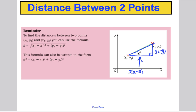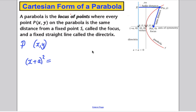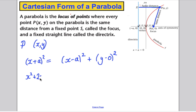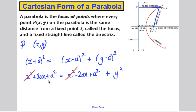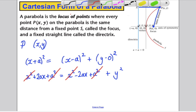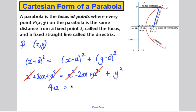Using the distance between two points formula: (x plus a)² equals (x minus a)² plus (y minus 0)². Expanding: x² + 2ax + a² equals x² minus 2ax + a² plus y². You can subtract x² from both sides and subtract a² from both sides, then add 2ax to both sides, giving 4ax equals y², and hence y² equals 4ax.